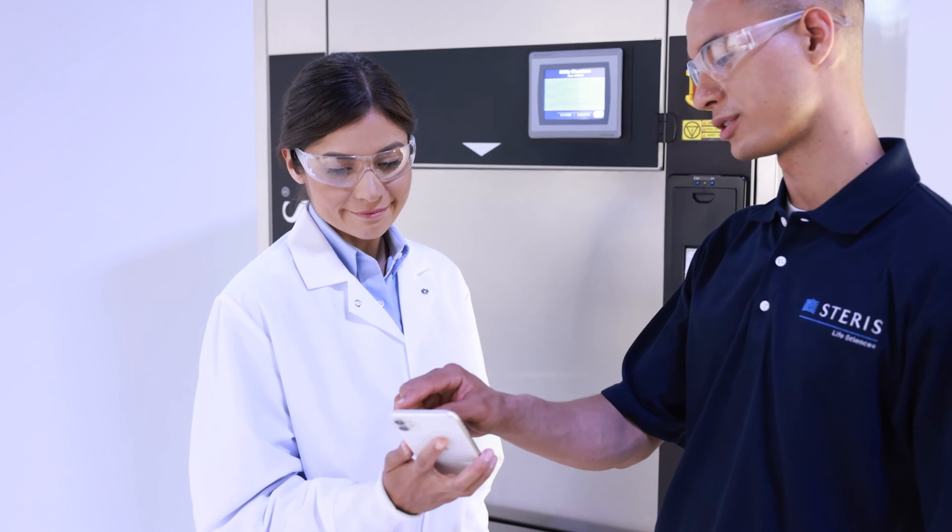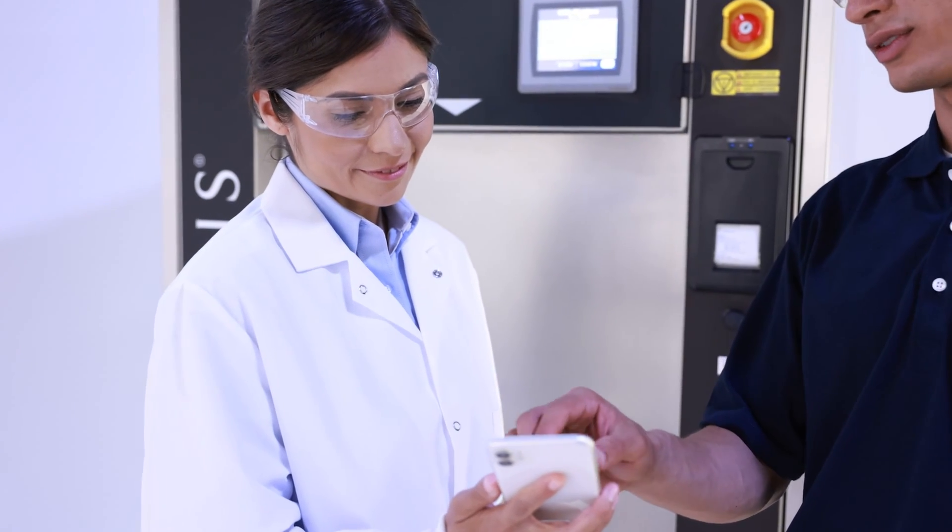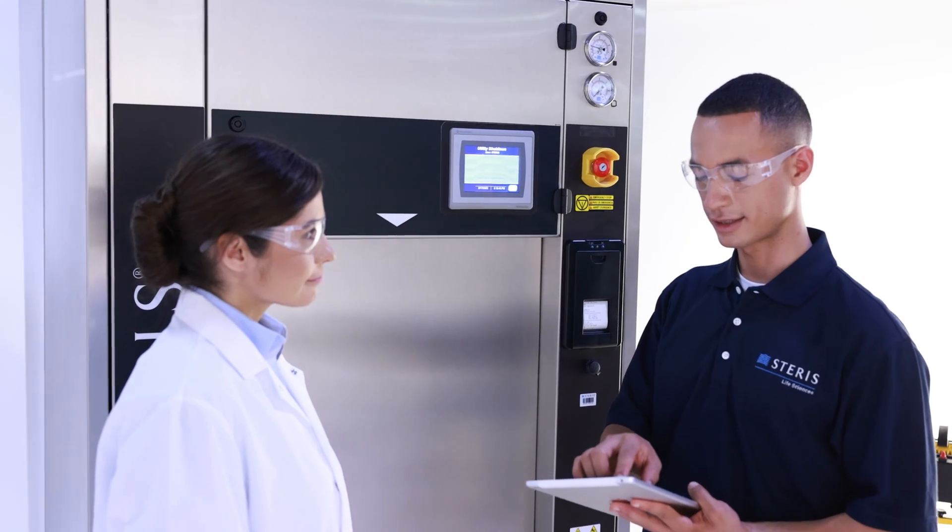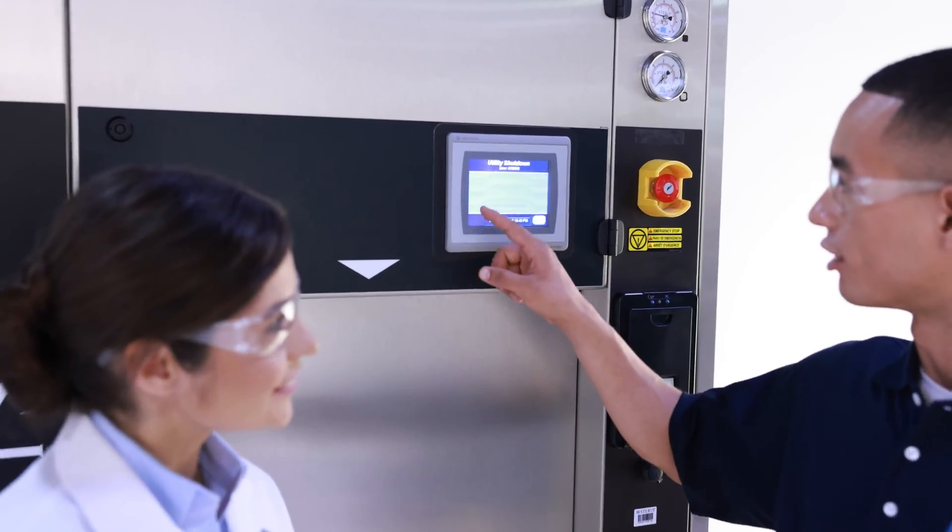Stay connected to what is happening in the laboratory with your AMSCO 600LS by receiving an email or text alert on the status of the equipment. In addition, the sterilizer can be interfaced with and monitored by your building management system.